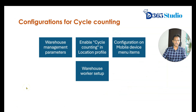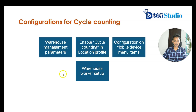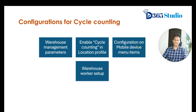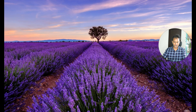Let us look at some basic configurations required for cycle counting to work. We have a few settings in the warehouse management parameters. In the location profile, you have to enable the cycle counting parameter — only when that is enabled will cycle counting work get generated for those eligible locations. You also have certain parameters in the mobile device menu items, and certain configuration in the warehouse worker setup. We're going to take a look at all of these now.